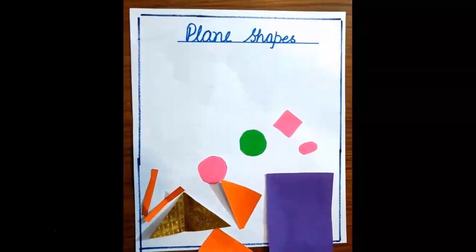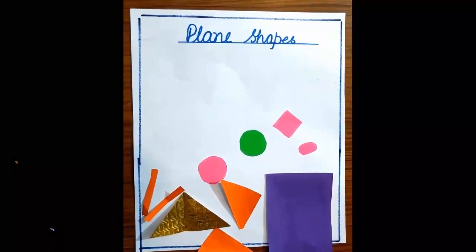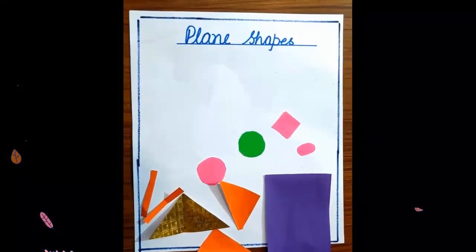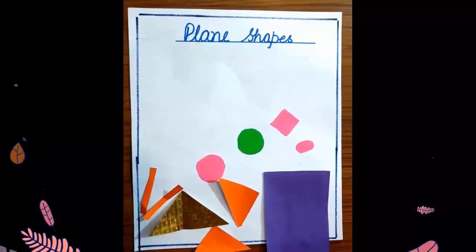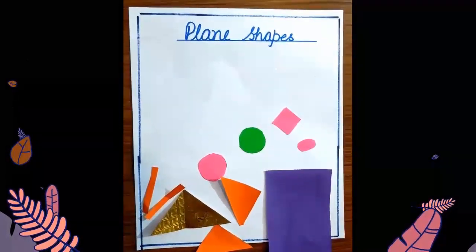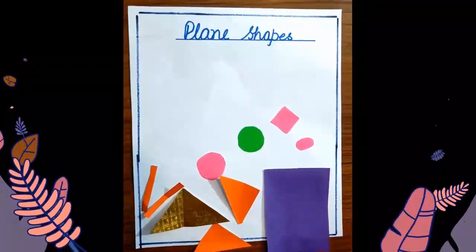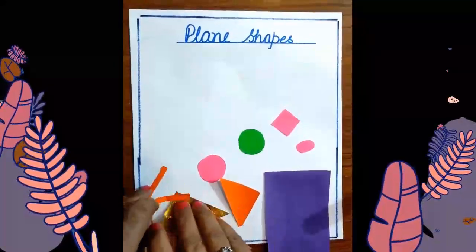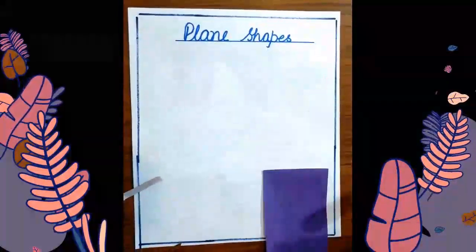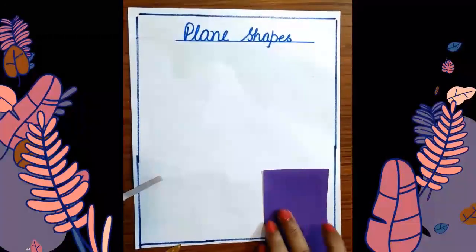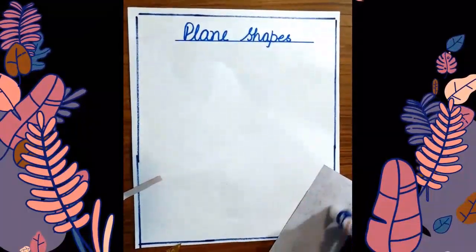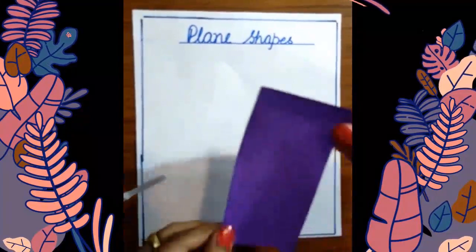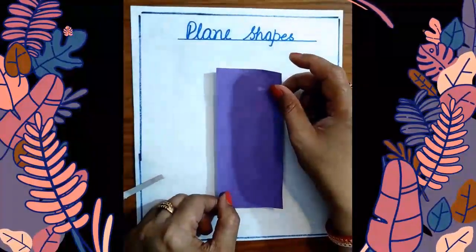Let's do one interesting activity. This is Diwali time — you all fire crackers, and especially rockets. So we will make a rocket using plane shapes. What are the things required for this activity? Your scrapbook, colored papers in different shapes, and a favor stick. This activity is very easy. First of all, I have already cut this paper — it's in a rectangular shape.